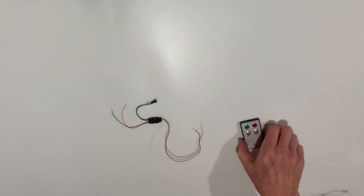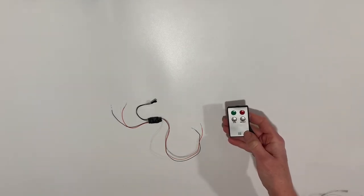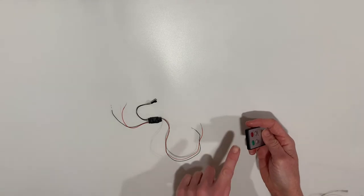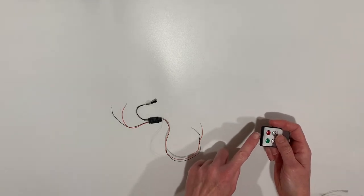A remote control is a great way to control your projects. This is a line-of-sight type remote, which means it sends an infrared beam.